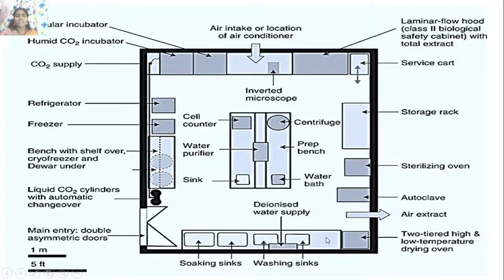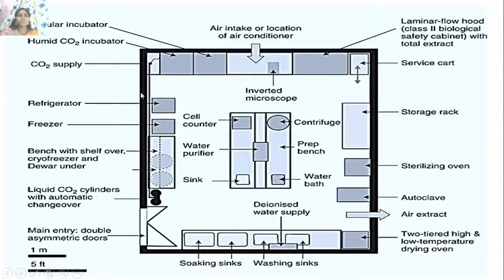In the centre you can see the cell counting facility, centrifuge, water purifier, and the preparatory bench for cell culture technique. This is one ideal map showing where certain equipment is placed in the animal cell culture laboratory.